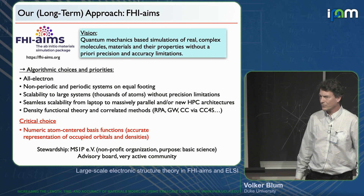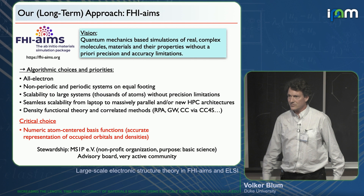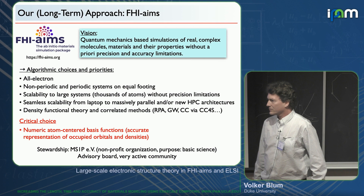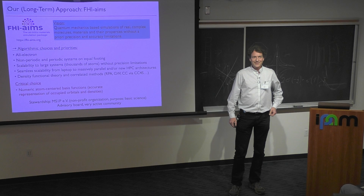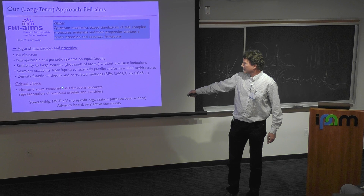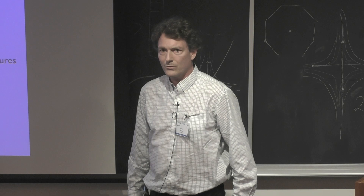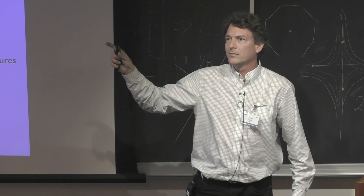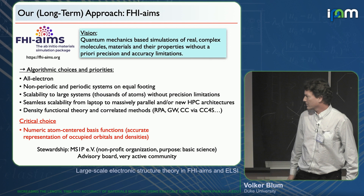If we could do GW at the same scale we would, and many people in FHI-aims have been pushing GW for years. In molecules, we were among the first to do well-converged GW calculations. The critical choice in this code is numeric atom-centered basis functions, which have the atomic solutions exactly in the calculation. You can scale from light, fast calculations to something very tight and precise. This has carried us for a long time on the density functional theory side.